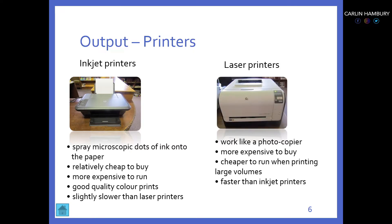Then we have laser printers. These work like photocopy machines — they are bigger and more expensive, but in the long run, if you print in large volumes, it is cheaper. Where an inkjet gives you 50 to 100 pages before ink needs replacing, a laser gives you maybe a thousand pages before the toner needs to be replaced. It's also faster than the inkjet. Laser printers generally only print in black and white. A color laser is a specialized, even more expensive machine usually found in printing shops. If you're printing pictures, go inkjet; if it's large volumes of documents, go laser.